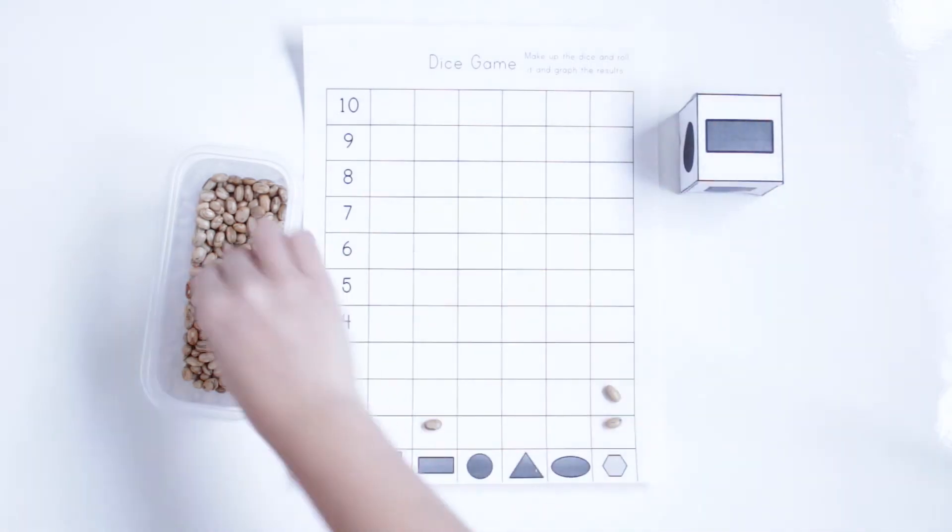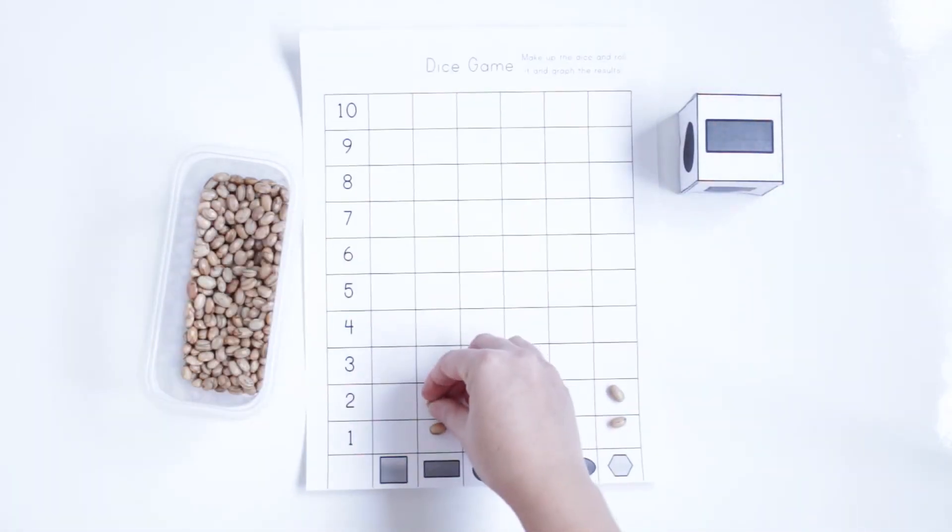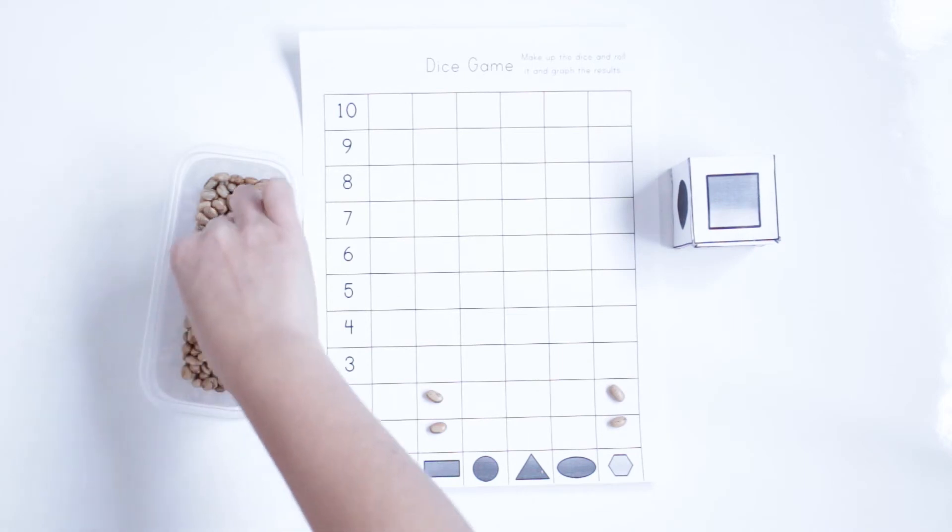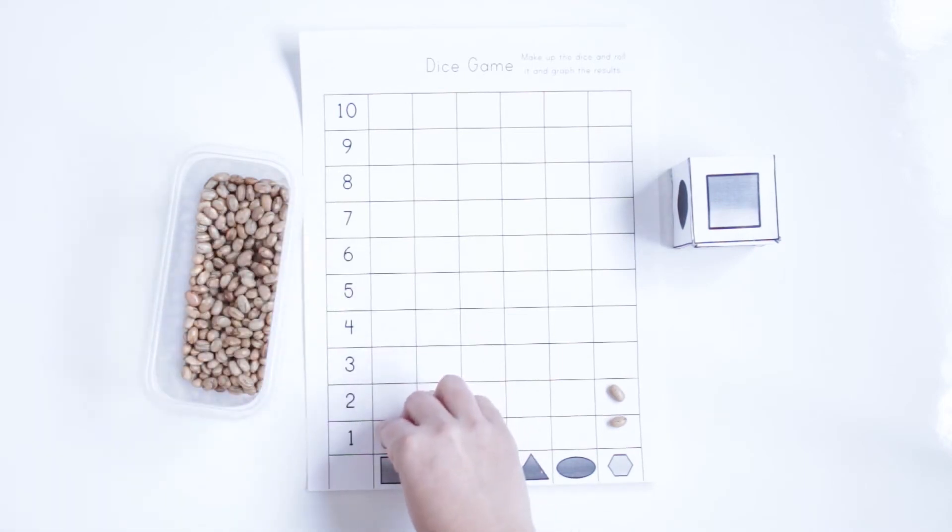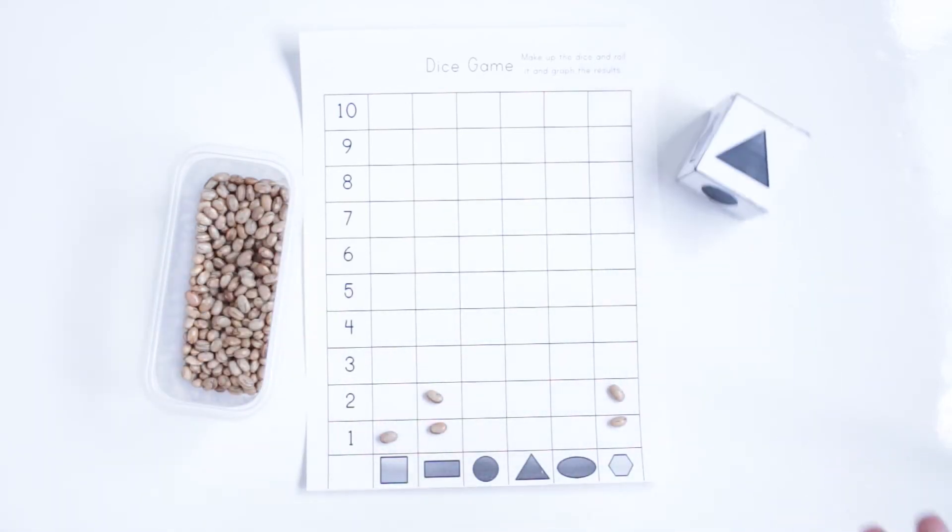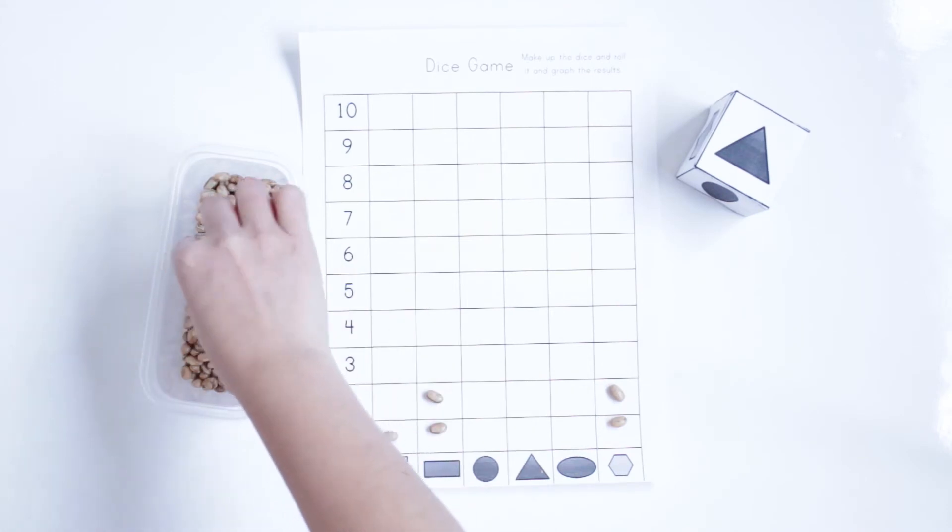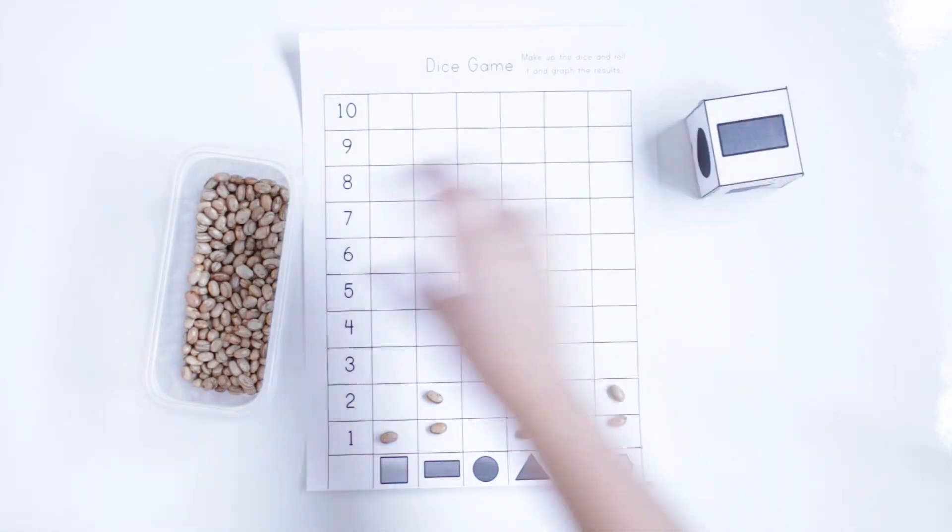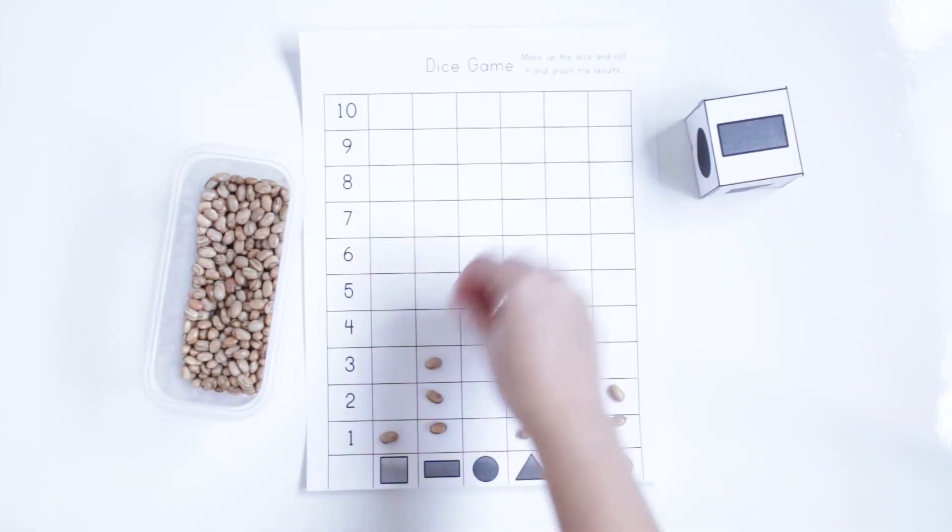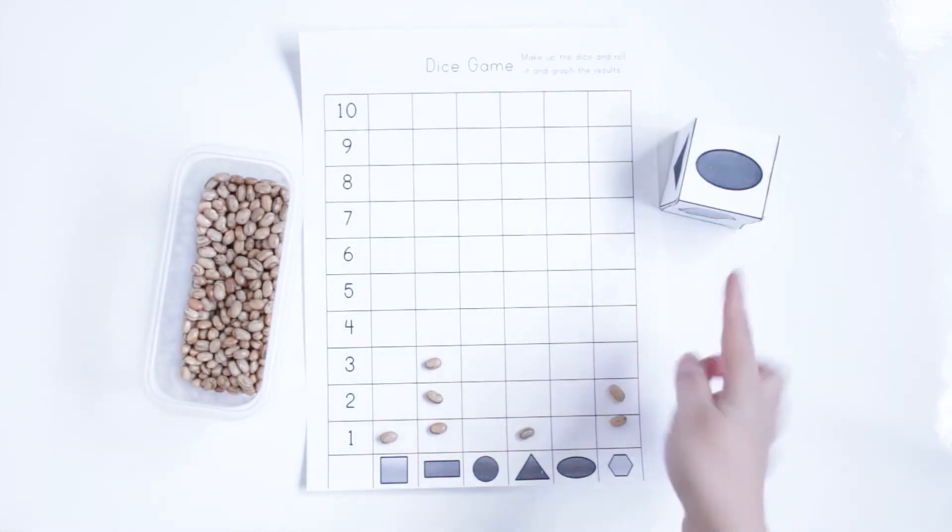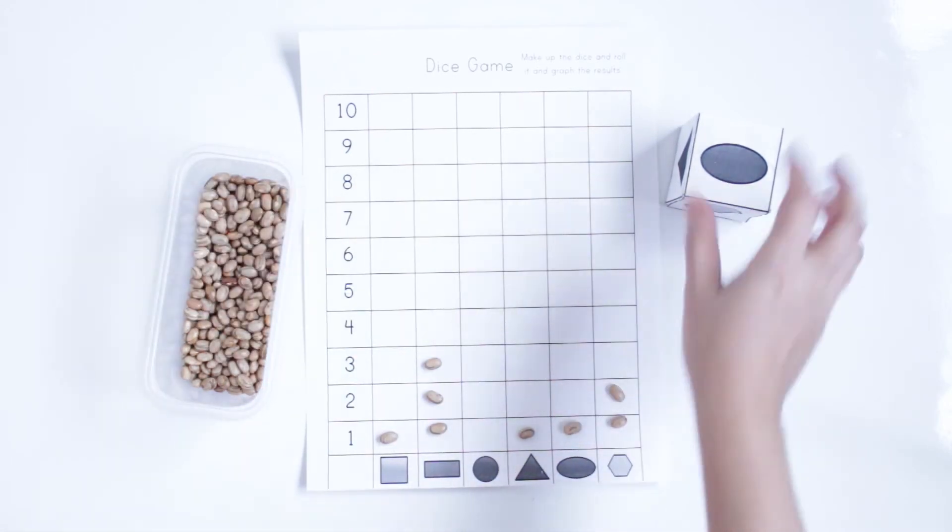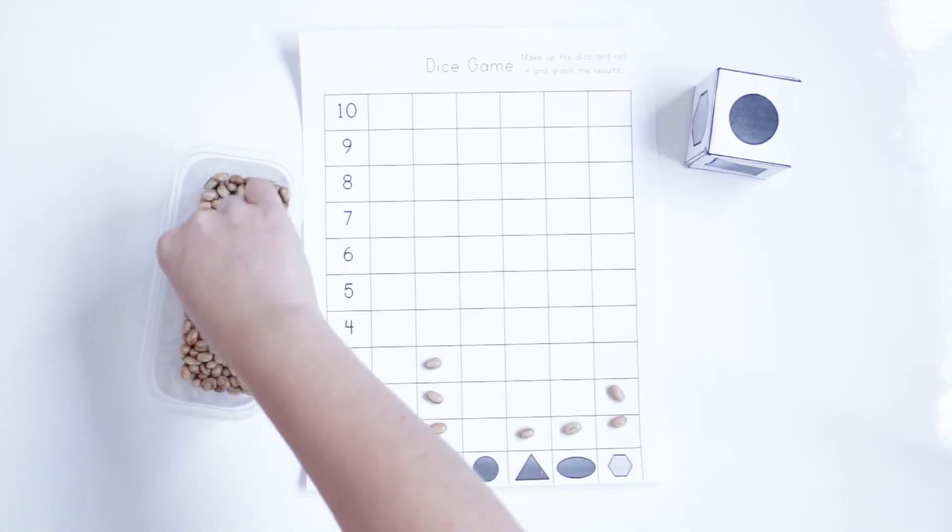Rectangle again, so two rectangles. One square. One triangle. Another rectangle. One oval. One circle.